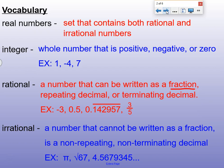A real number is a set that contains both the rational and irrational numbers. An integer is a whole number that is positive, negative, or zero. So here we have examples for you.